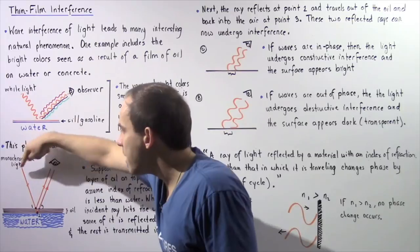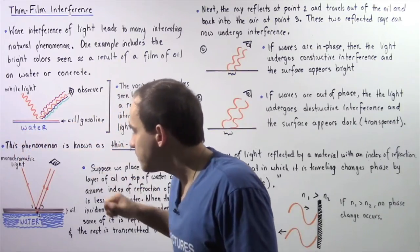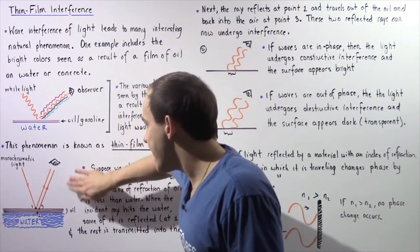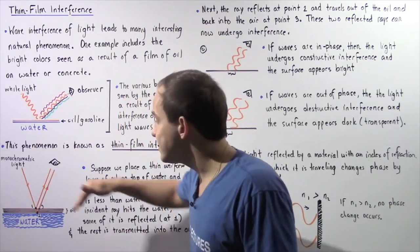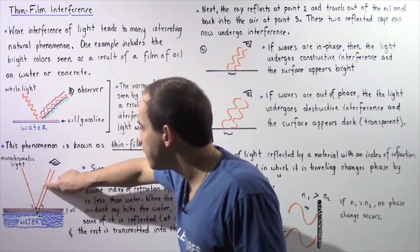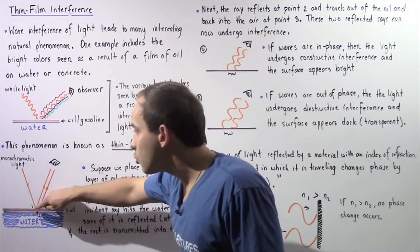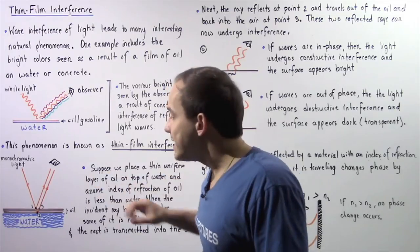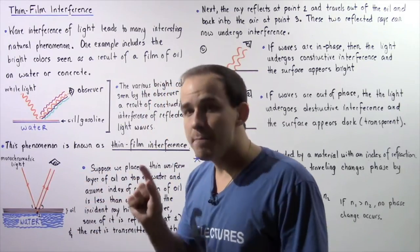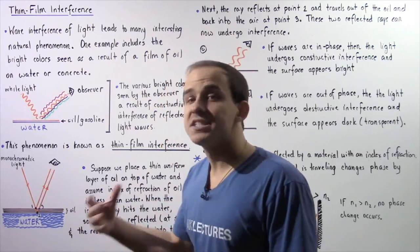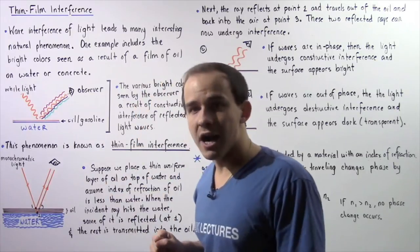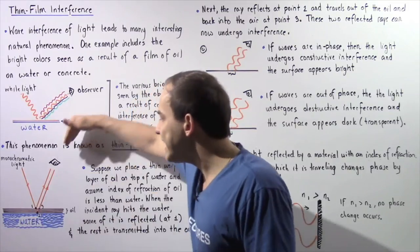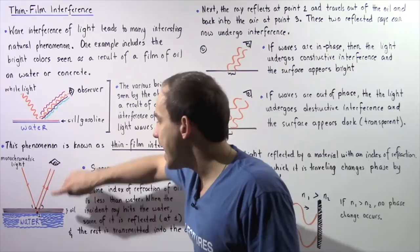Let's suppose our monochromatic ray of light travels through air and eventually hits point one, which represents the boundary between air and oil. Some of this light will reflect as shown by the reflected ray. The rest of that monochromatic light will be transmitted and will travel through the oil. When that transmitted ray hits the boundary between the oil and water, some of it will reflect as shown in the diagram at position two.